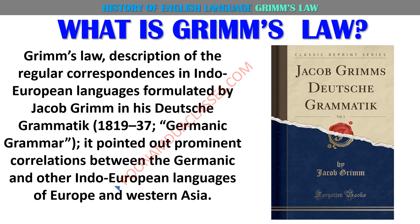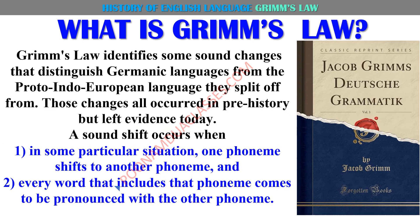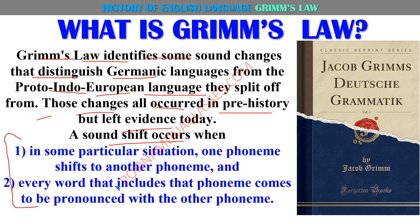To Grimm's Law ka mention kiya hai Jacob Grimm ne apni kitaab 'Deutsche Grammatik' mein — jisko hum kahenge Germanic Grammar — aur unhone woh prominent changes ko point out kiya jo Germanic languages mein dheere dheere aaye the. Grimm's Law identifies some sound changes that distinguish Germanic languages from the Proto-Indo-European language they split off from. Those changes all occurred in prehistory but left evidence today — dheere dheere yeh changes aaye lekin ab properly evident hain.